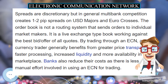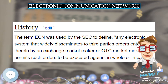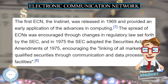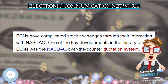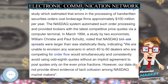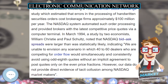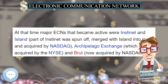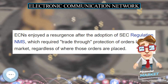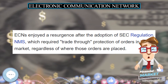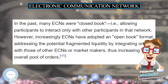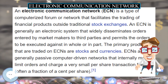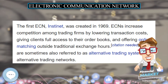Today, multiple FX ECNs provide access to an electronic trading network supplied with streaming quotes from the top-tier banks in the world. Their matching engines perform limit checks and match orders usually in less than 100 milliseconds per order. The matching is quote-driven, and multi-bank competition generally creates one to two pip spreads on USD majors and euro crosses. Trading through an ECN gives a currency trader greater price transparency, faster processing, increased liquidity, and more availability in the marketplace. Banks also reduce their costs as there is less manual effort involved.